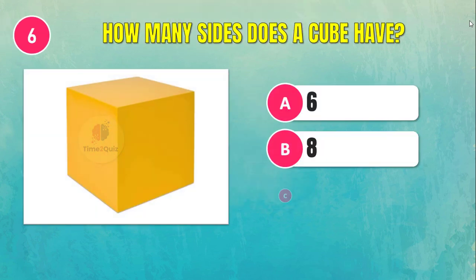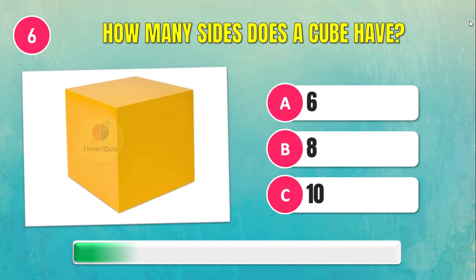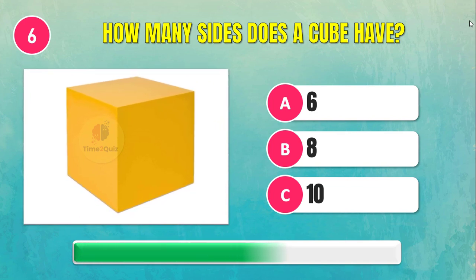How many sides does a cube have? The answer is 6.